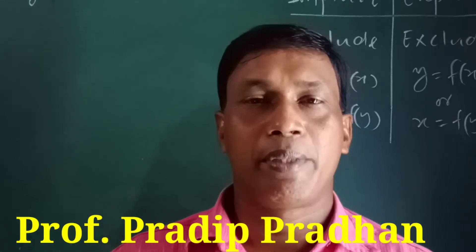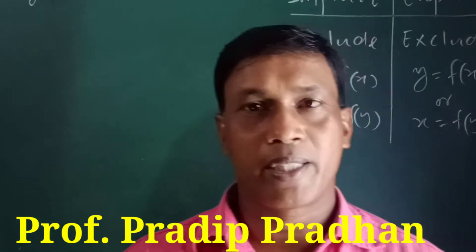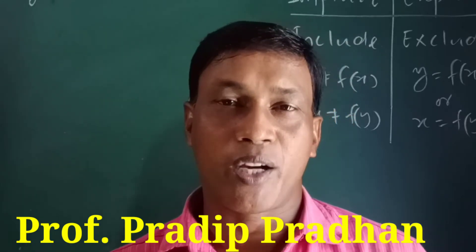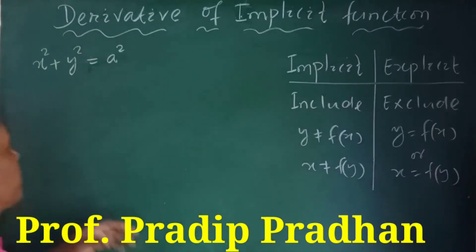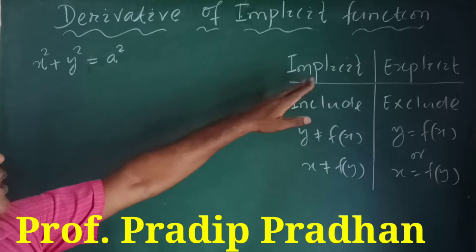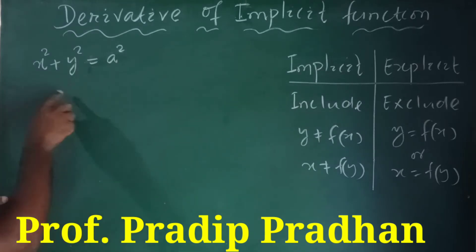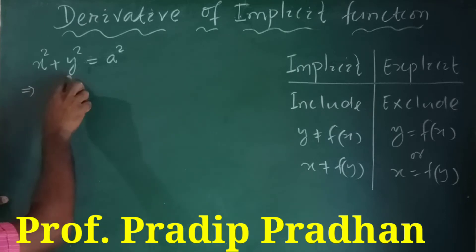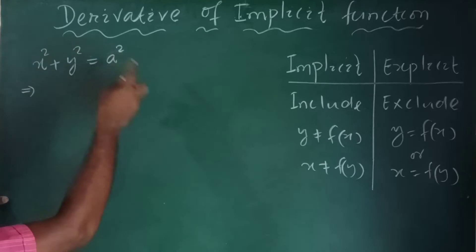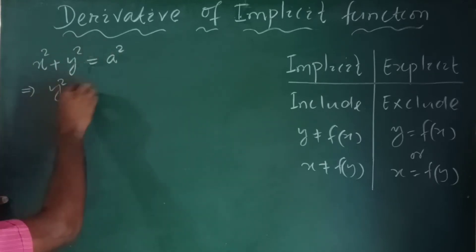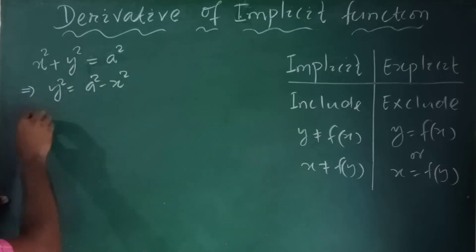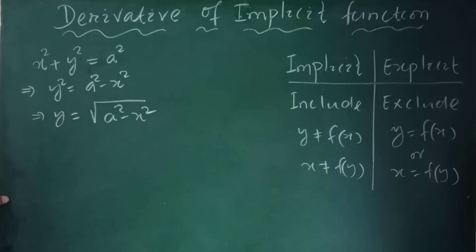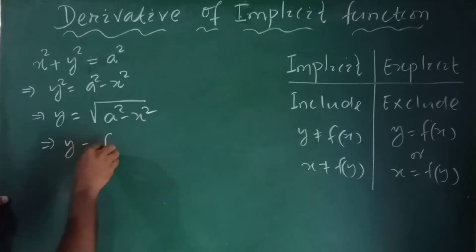Hello viewers. Today we are finding the derivative of an implicit function. First, let's understand what an implicit function is. Take an example: x squared plus y squared is equal to a squared. If we want to express y in the form of x, then y squared equals a squared minus x squared, which implies y equals root over of a squared minus x squared. That means y is f of x.